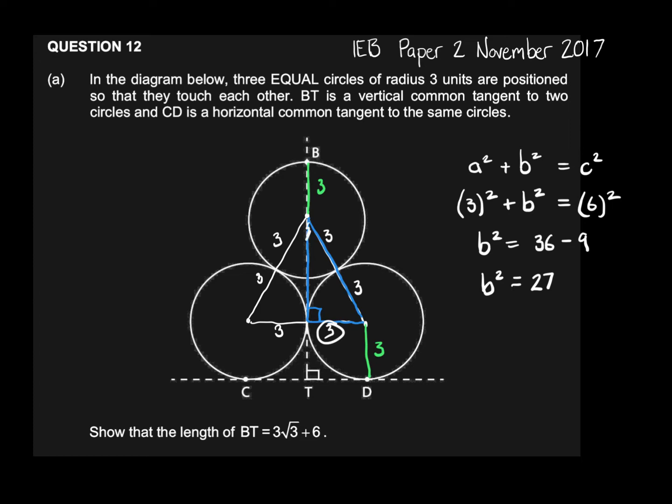So b² equals 27. When I'm talking about b I'm talking about that red line. Now obviously I need to square root both sides and I'm going to get an answer of 3√3. Now remember the height of BT is going to be the length b plus the 3 from the other radius plus the 3 from the other radius. That means the length of BT is 3√3 + 6, which is what we were meant to prove.